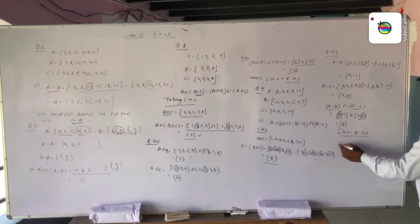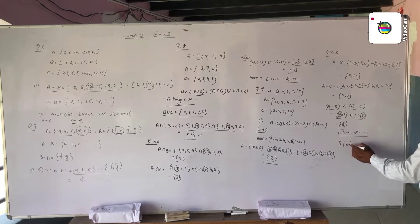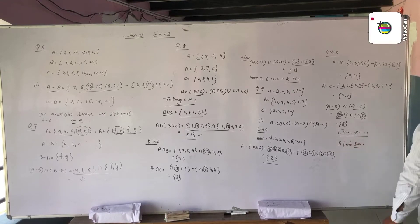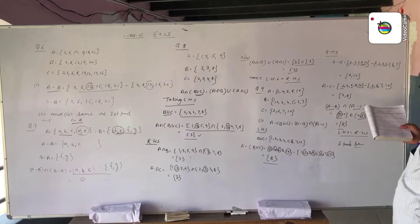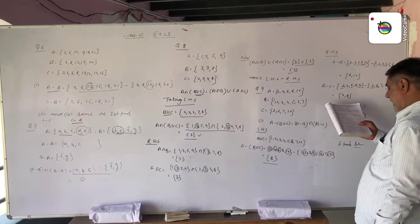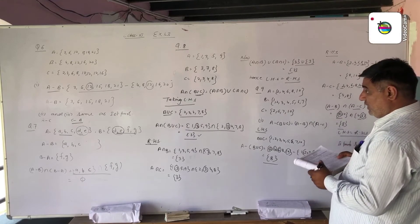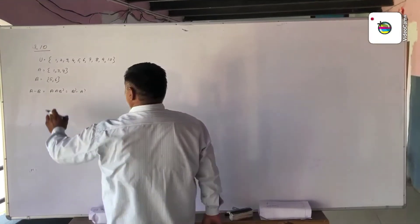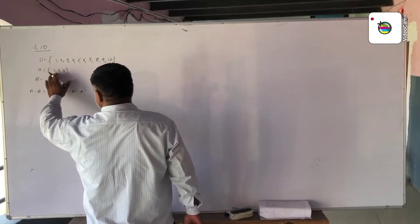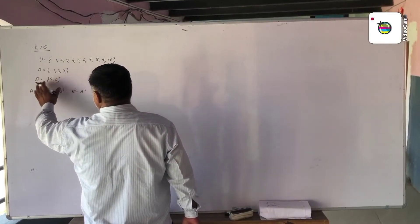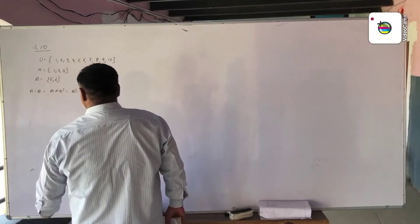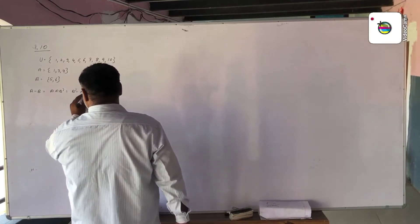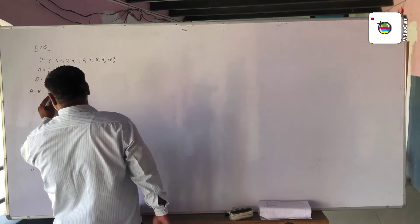The second part of this question is similar to the first. Same approach using intersection, union, and difference. In question number 10, A is the set of 1, 3, 4 and B is 5, 6, with universal set 1 to 10.